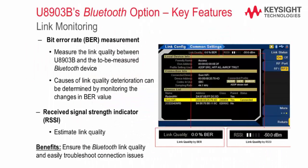Another key feature to note is that it also comes with a link monitoring feature. One of them is bit error rate measurement. The bit error rate measurement measures the Bluetooth link quality between the U8903B and the tested Bluetooth devices, so causes of link quality deterioration can be determined by monitoring the changes in bit error rate.